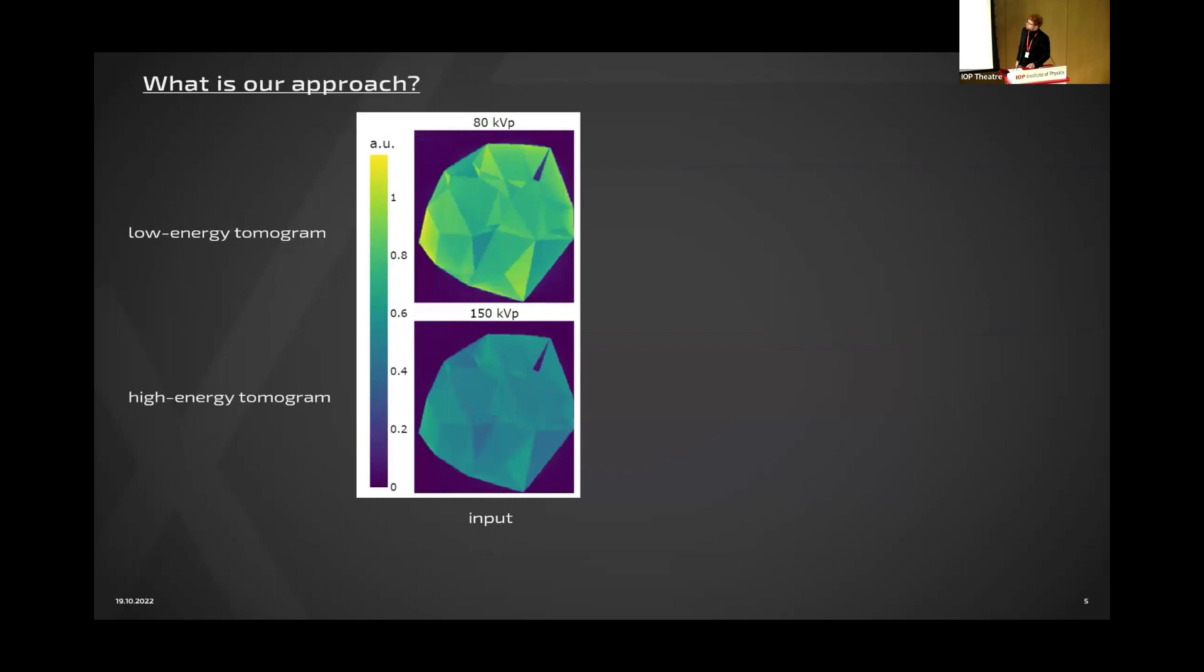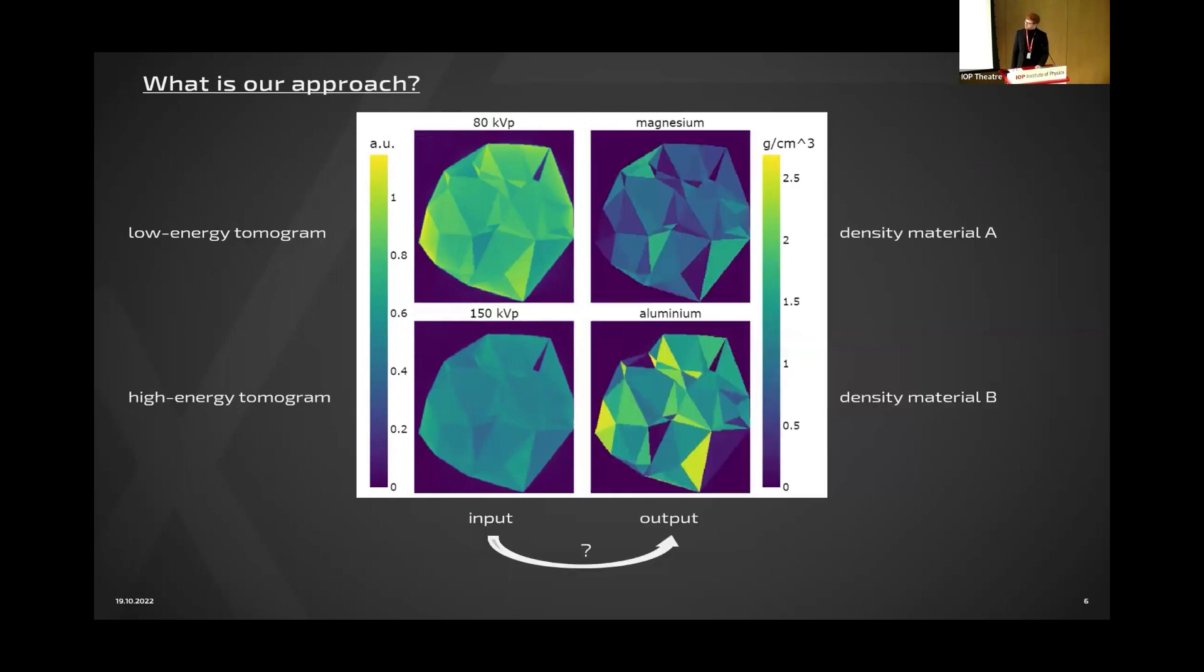So what is our approach? We try to do it very simple. We have some input data: a low energy tomogram here at 80 kVp, a high energy tomogram, and we want to get the material maps. For example, there's the triangle area which completely consists of aluminum, and over here you see there is no magnesium inside.